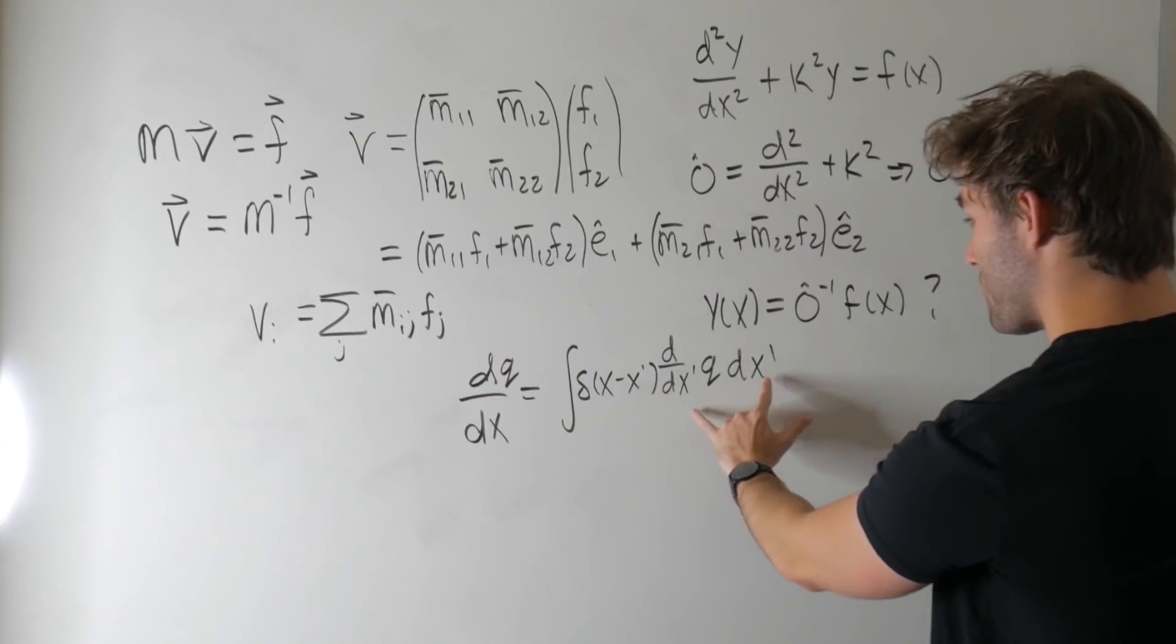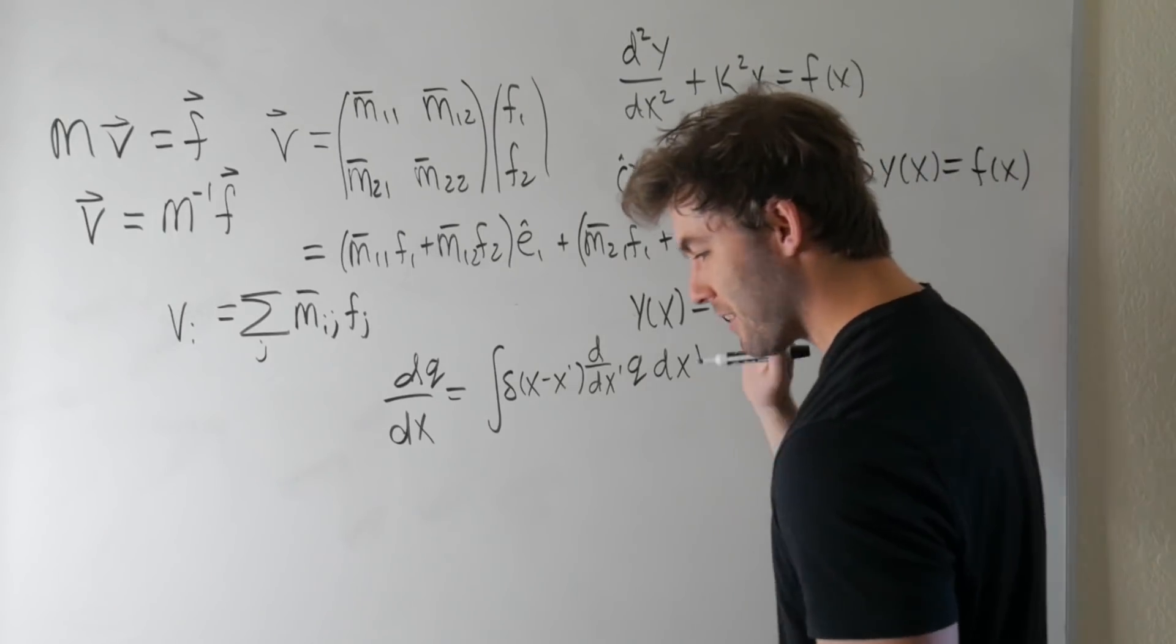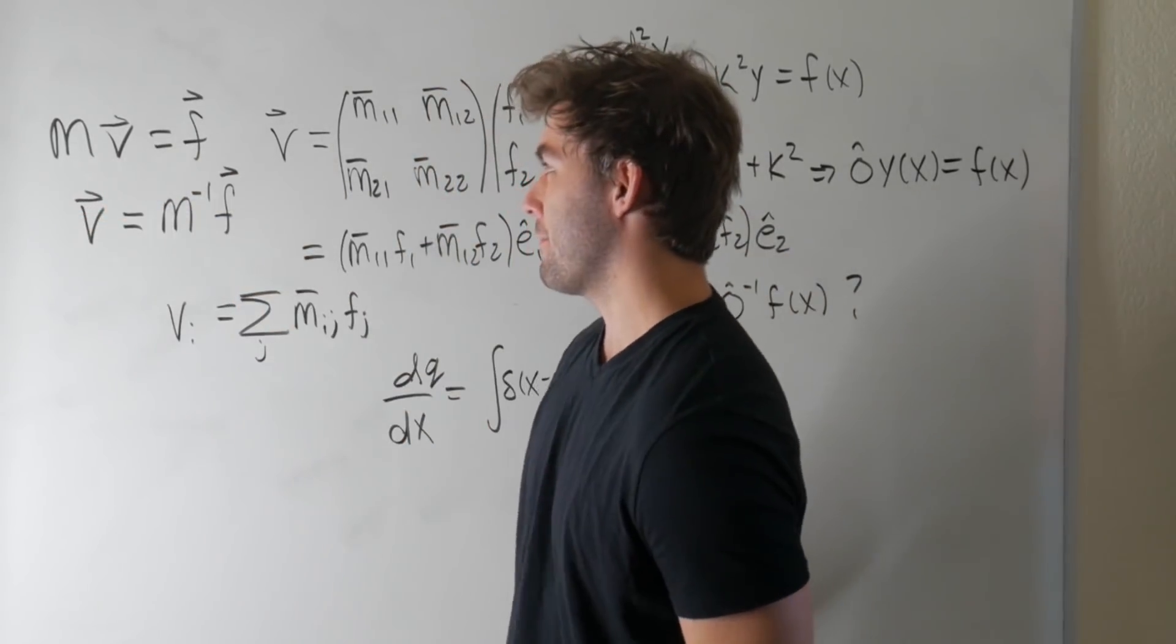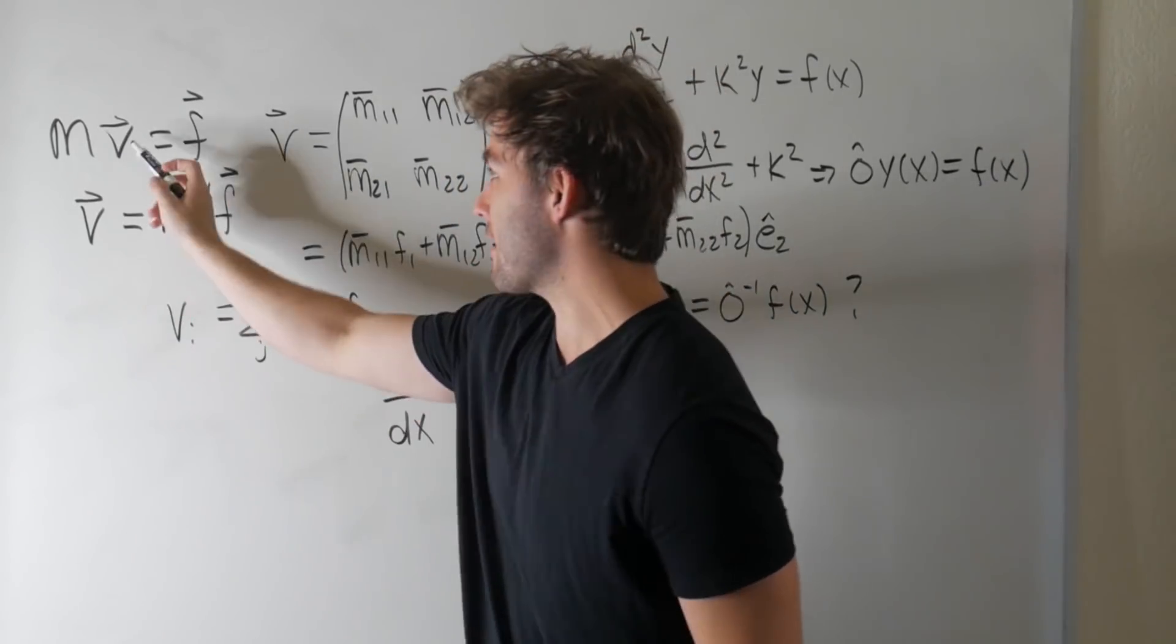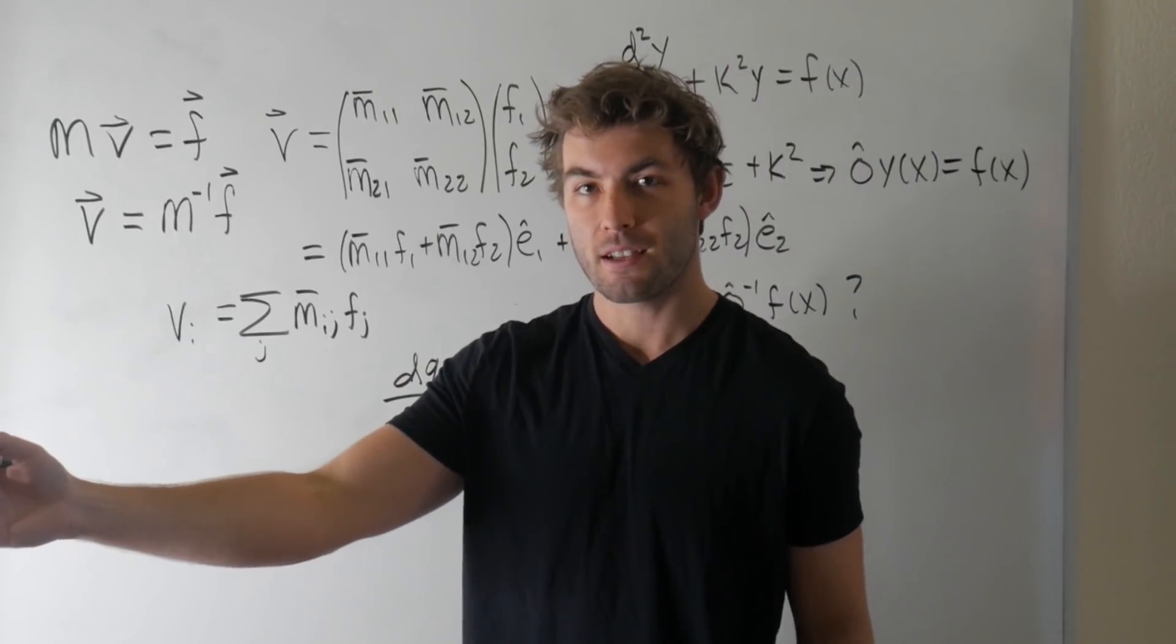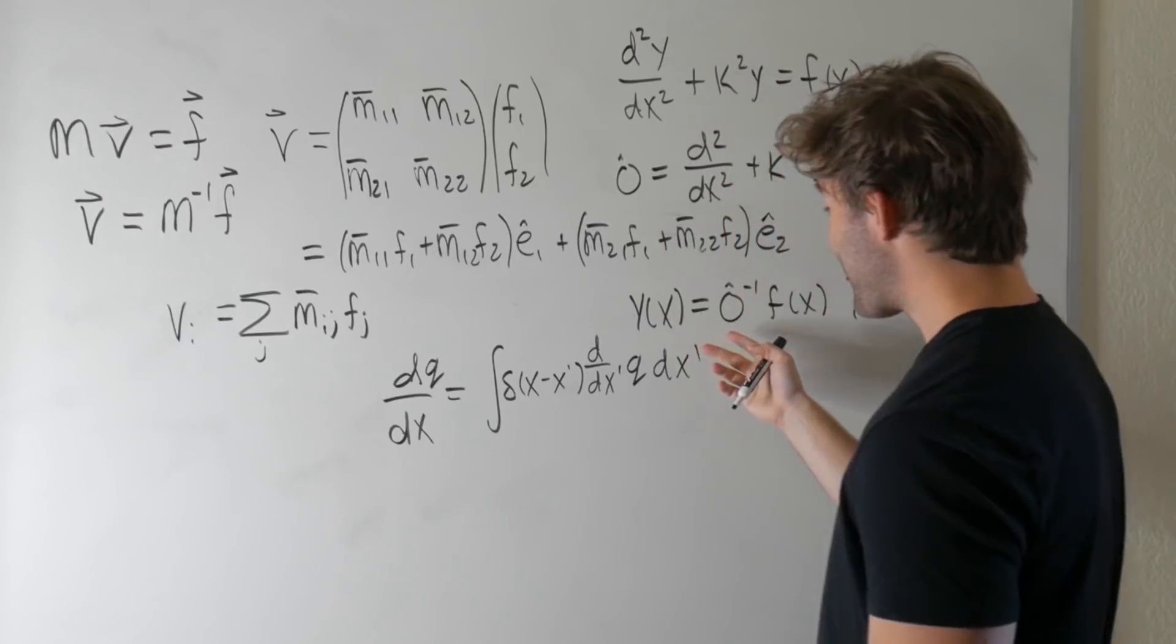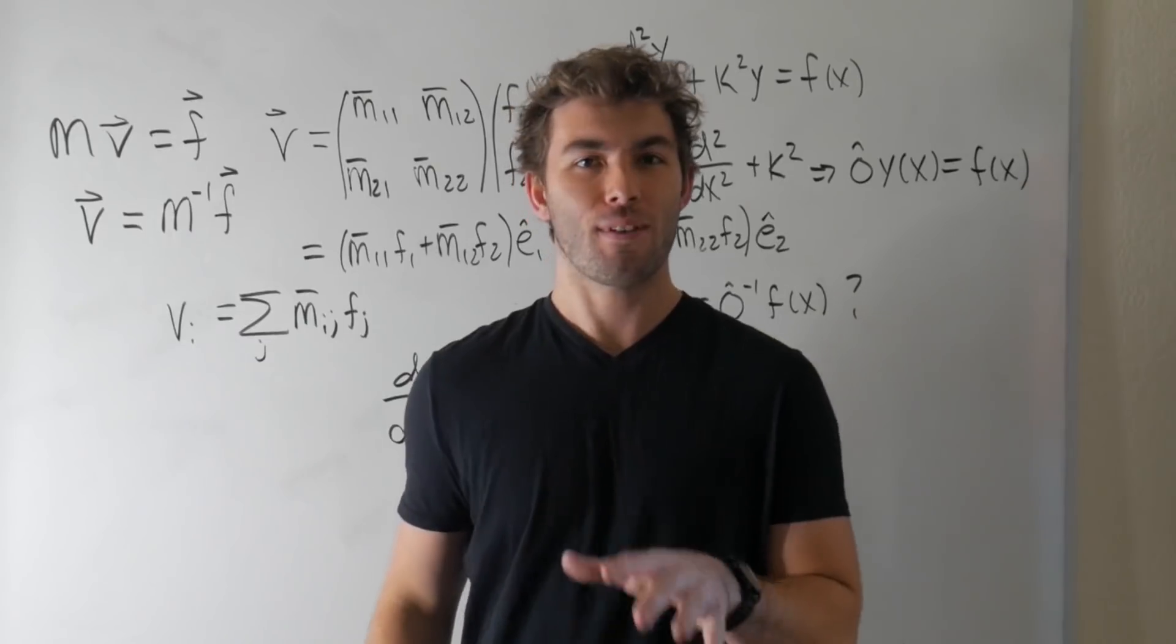So this is the real operator that has two indices, where that second index is summed over in continuous space, that sum becomes an integral. So when considering these inverses, we're considering the inverses of some differential operators. So here, when we have a matrix acting on something, we can undo that act by multiplying that by the inverse, right? We get the vector back. So if we have some differential operator, if we take the derivative of something, it would make sense that we get back that something by taking the integral, right? The integral of the derivative gives you back the function.